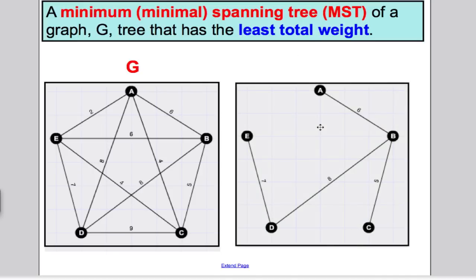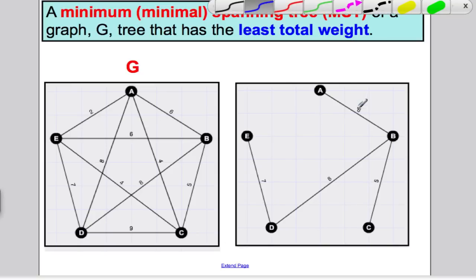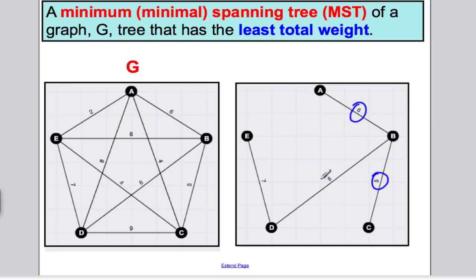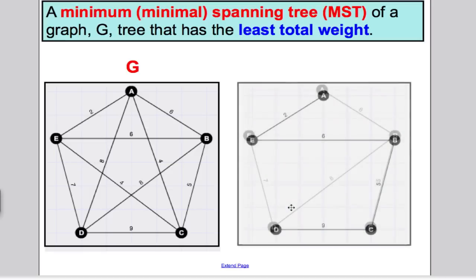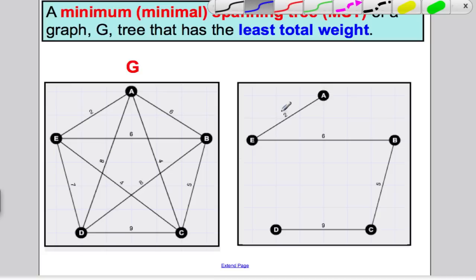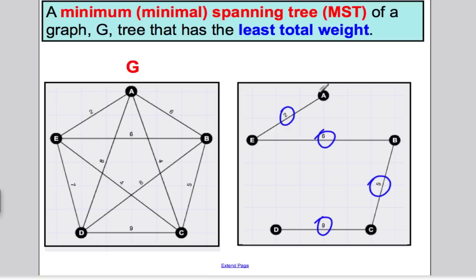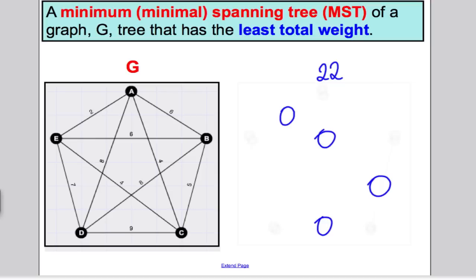This is certainly a spanning tree because all the vertices are connected. What's its weight? Well, 6 add 5 is 11, add 8 is 19, add 7 is 26. That has weight 26. Can I do any better than that? Let's have a look at another one. I've drawn another one here. Everything is certainly connected. It's a spanning tree, there are no cycles. And what's this weight? 2 and 6 is 8, add 5 is 13, add 9 is 22. That has certainly less weight than the previous one we had, which was 26.